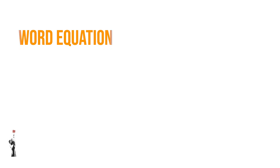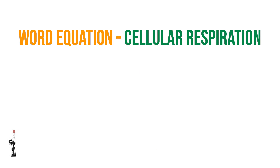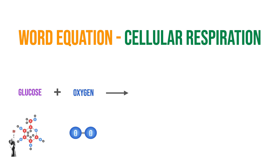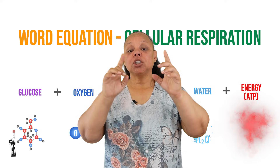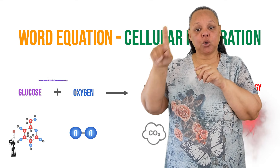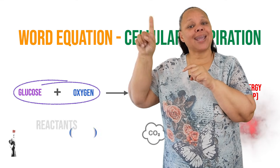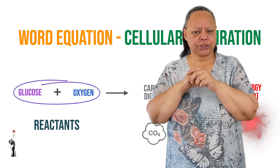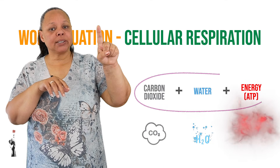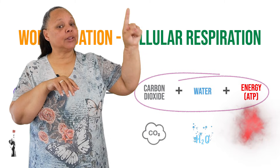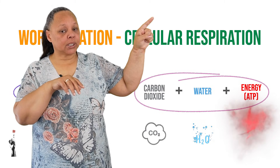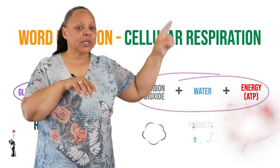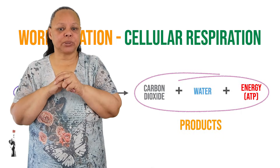Let's take a look at the word equation for cellular respiration. For this reaction to take place we need glucose and oxygen, and after this reaction takes place we produce carbon dioxide, water and energy. So in this equation glucose and oxygen are the reactants, whereas carbon dioxide, energy in the form of ATP, and water will be our products during the cellular respiration process.